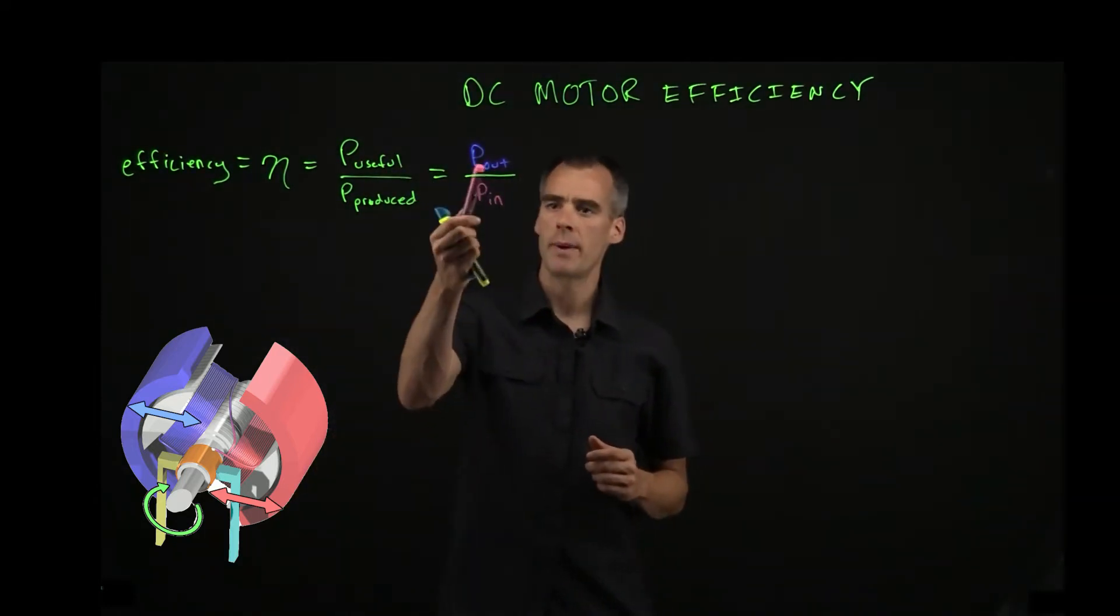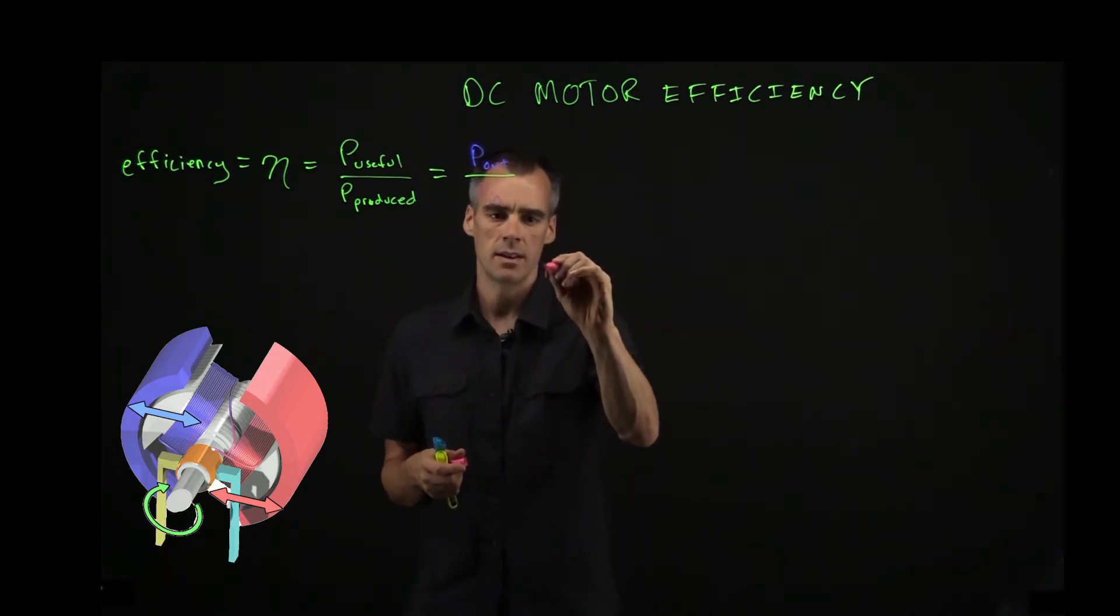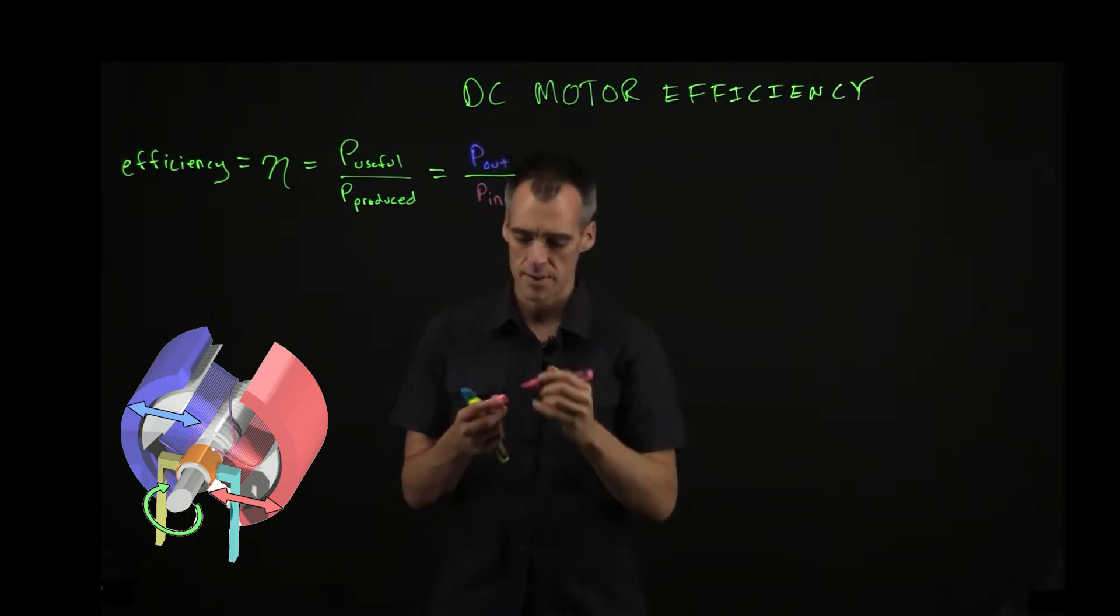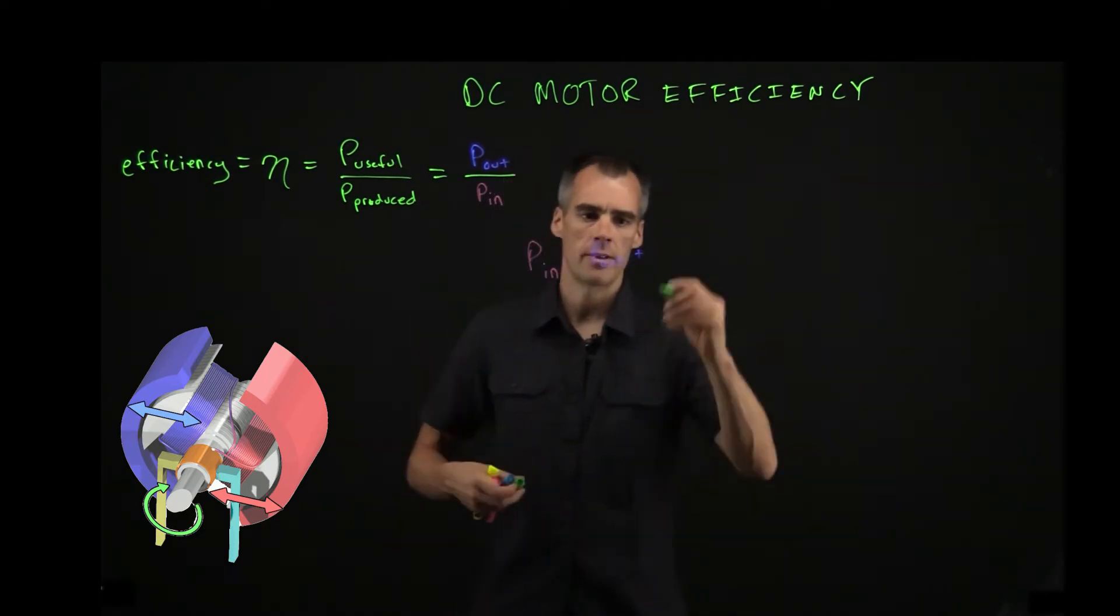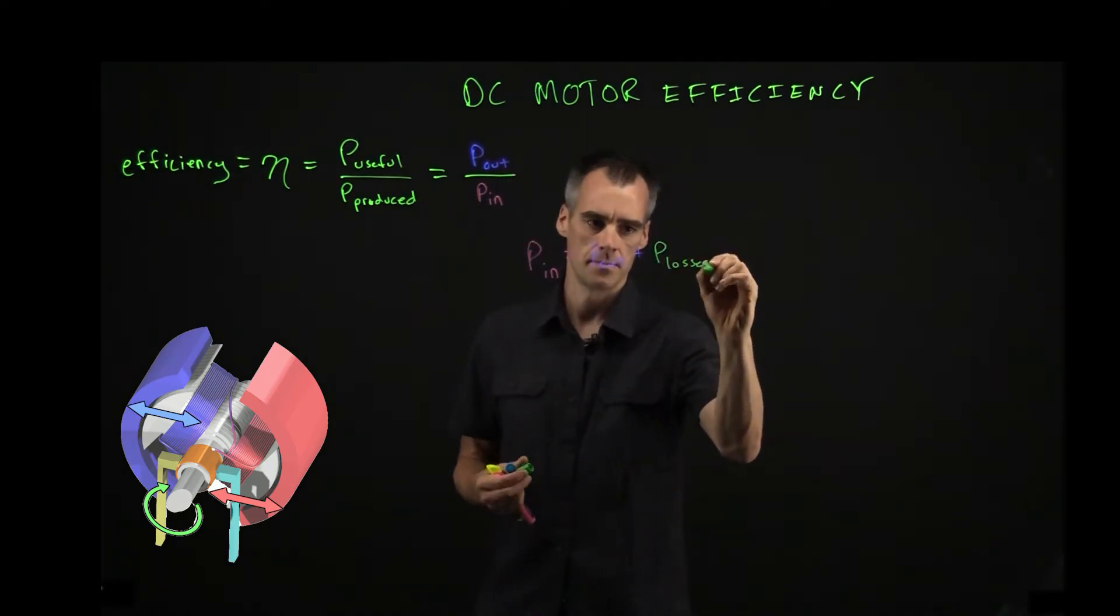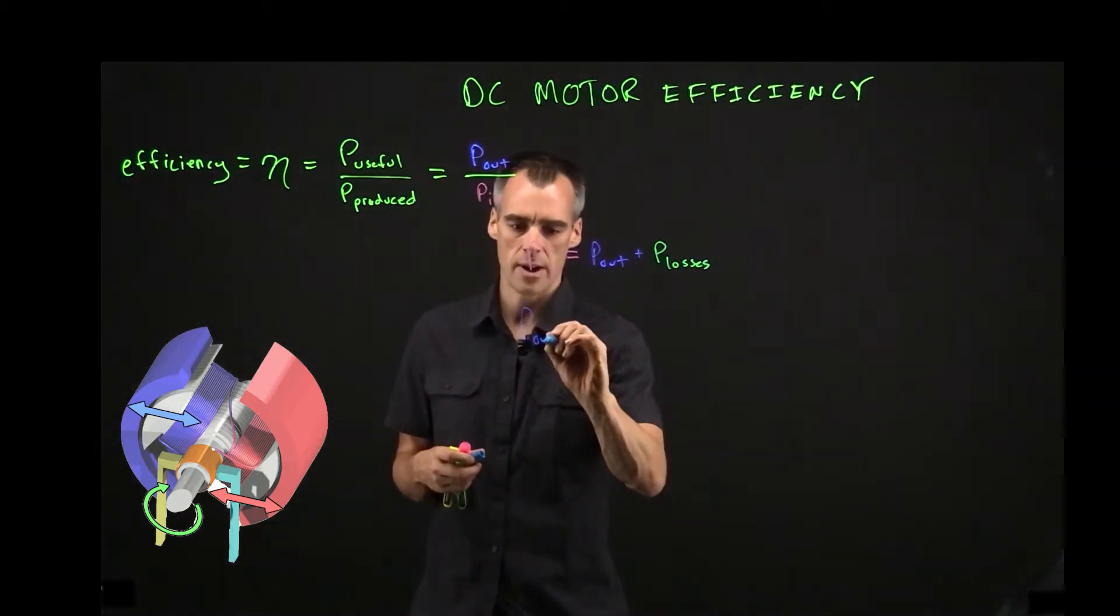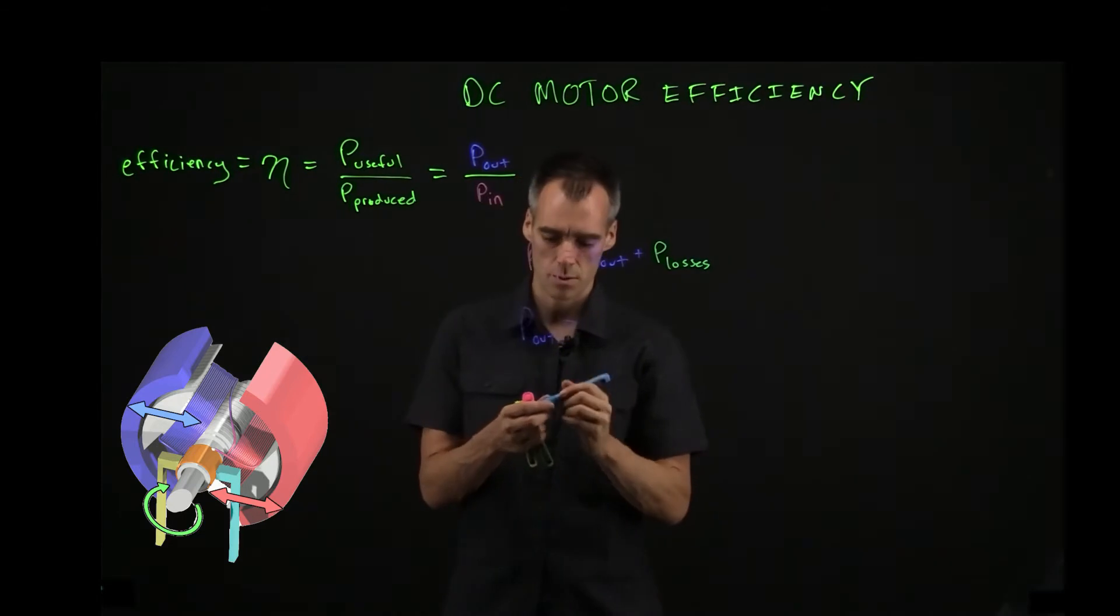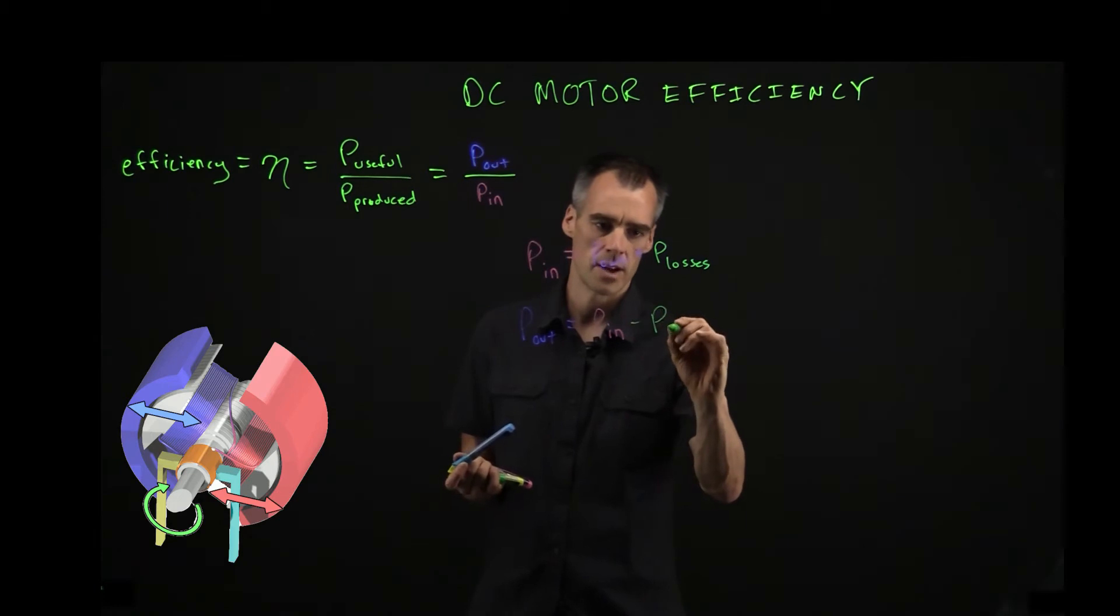And our power in and power out are going to relate to each other. So our power in, due to conservation of power, is going to equal our power out plus any power that we've lost. And if we wanted to solve for power out, we could say power out is going to be equal to our power in minus our power loss.